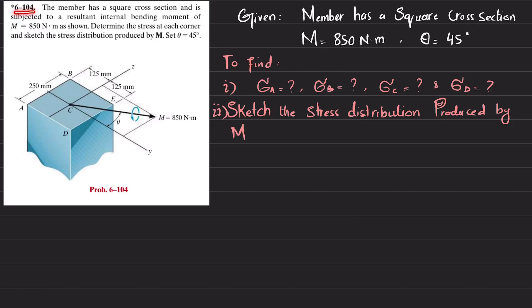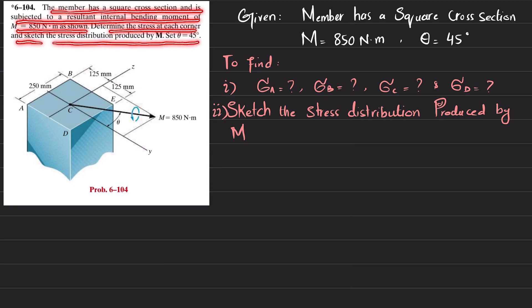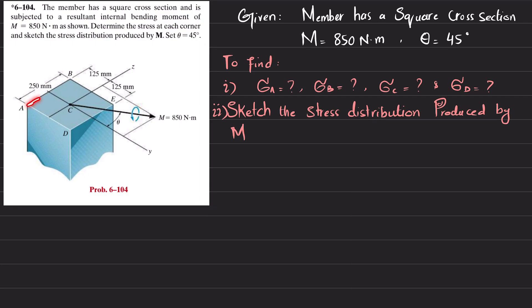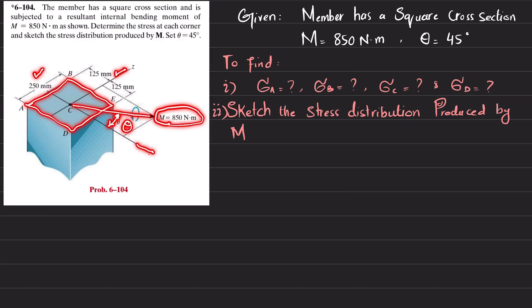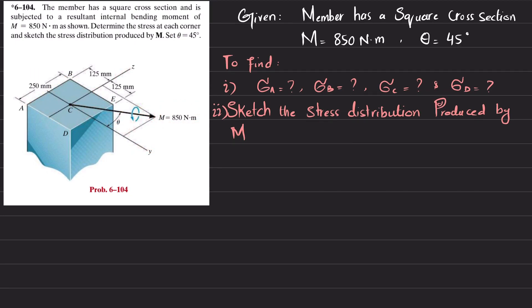Welcome back. Problem 6-104: the member has a square cross section and is subjected to a resultant internal bending moment of 850 Newton-meter as shown. Determine the stress at each corner and sketch the stress distribution. Theta is equal to 45 degrees. This is a square cross section with dimension 250 by 250 millimeter. This is unsymmetrical bending because the moment is not about the y-axis or z-axis — it is inclined to the y-axis making an angle theta of 45 degrees.